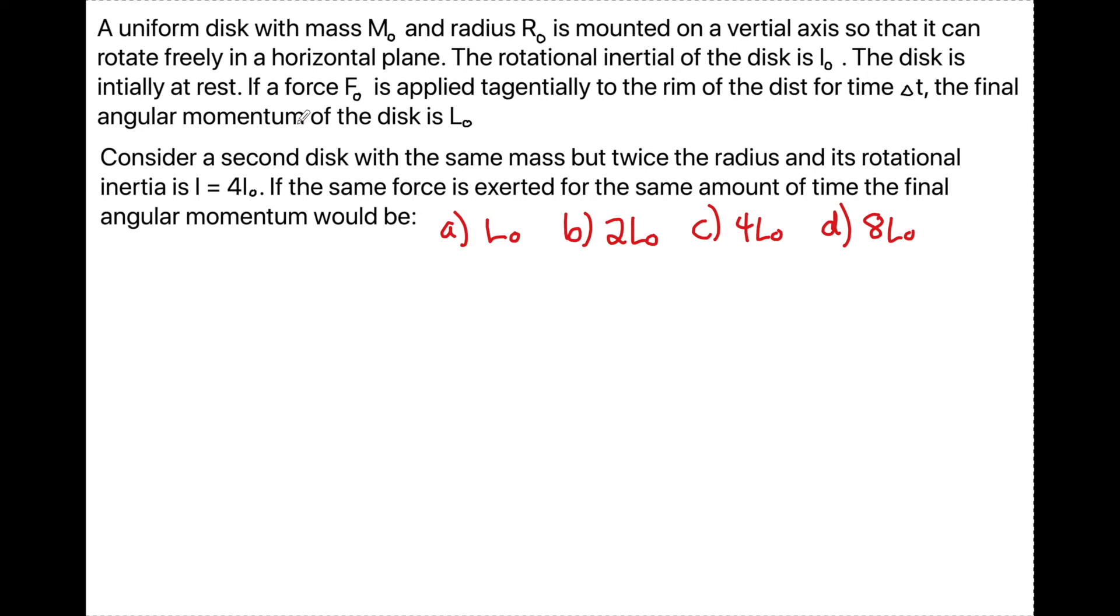Let's look at a problem with just a little bit more words and one of those classic AP questions now that just looks so wordy. So here's an example right from the AP classroom. A uniform disc with the mass M naught and radius R naught is mounted on a vertical axis so it can rotate freely in a horizontal plane. The rotational inertia of the disc is I naught. The disc is initially at rest. If the force F naught is applied tangentially to the rim of the disc for a time delta T, the final angular momentum of the disc is L naught. So those are pretty much just the facts of the case. Now here's where the question really asks what's going on here. Once again, this is qualitative. They're not asking us to exactly solve for something. They want to know if I consider a second disc, so now I have a different situation and the mass is the same, but the radius is twice and the rotational inertia also changes. What happens if I apply the same force, same amount of time, what would the change in angular momentum be?